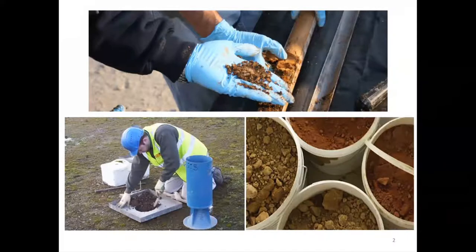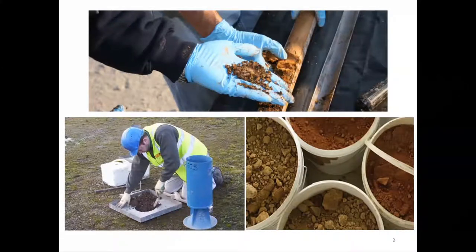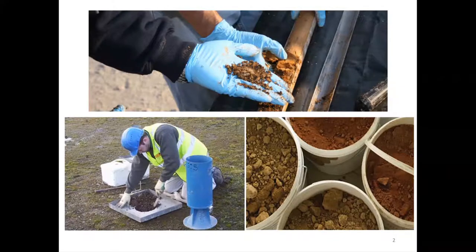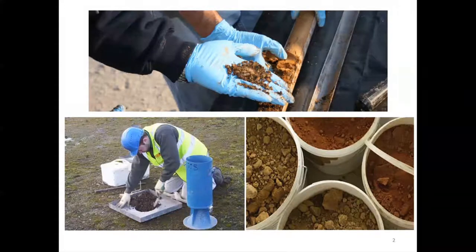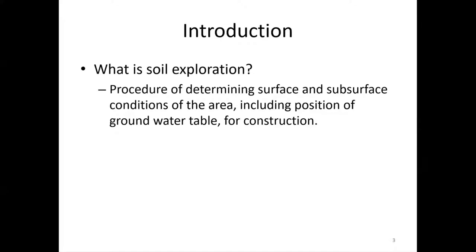Now you will dig into the ground or use other methods to identify the type and properties of the soil lying underground. Once you understand these, you can construct a safe foundation. Soil exploration is nothing but determining the surface and subsurface conditions in an area, including the position of the groundwater table, for construction purposes. This chapter covers the different methods adopted to find soil properties beneath the ground surface.